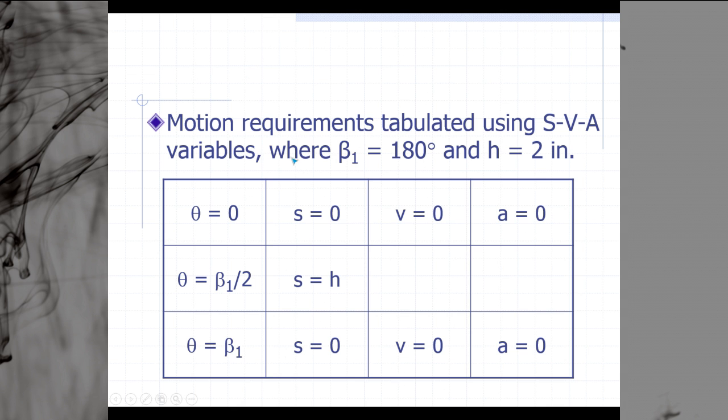The motion requirements are tabulated here for the position, velocity, and acceleration variables. Beta in this particular design is equal to 180, because we're combining our rise and fall. Our height is equal to 2 inches. At the beginning of our motion, theta is going to be equal to 0. We're at the bottom, or s is equal to 0, our velocity is equal to 0, and our acceleration is equal to 0. Halfway through, or beta divided by 2, which in this case would be 90 degrees, we should be at the top of our rise.